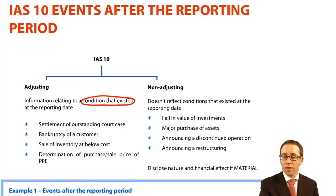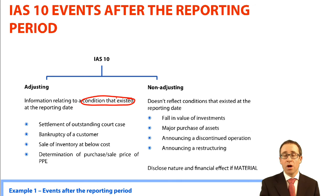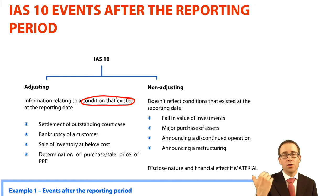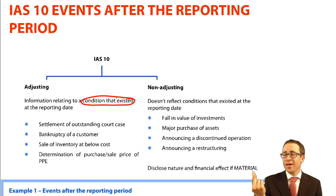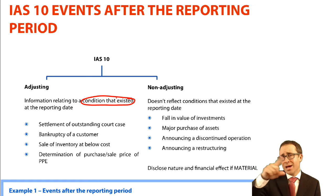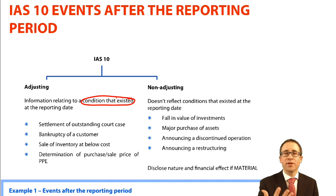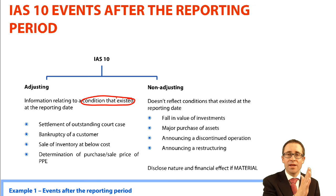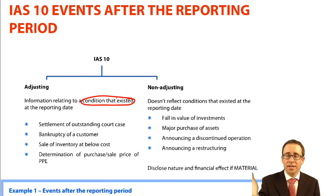Non-adjusting examples are where the condition didn't exist at the reporting period. So a fall in the value of an investment after the reporting date — don't go back and adjust your financial statements, because whatever caused the share price to fall wasn't happening at the end of the year. Similarly, if you decide to make a major purchase of assets after the year end, the decision hadn't been made at the reporting date, so the condition did not exist.